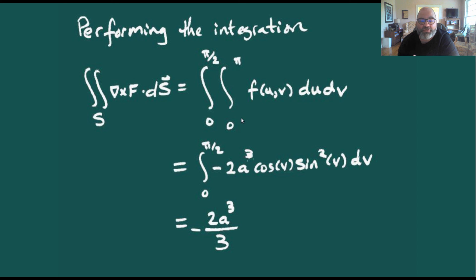With these limits of integration, ∫∫ f(u,v) du dv = -2a³/3. We've computed the surface integral of curl(F)·dS, so one side of Stokes' Theorem gives us -2a³/3.